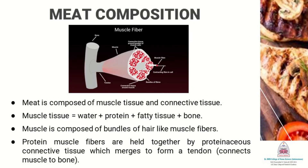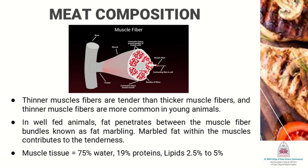Meat is composed of muscle tissues and connective tissues. Muscle tissues are made up of water, proteins, fatty tissues and bones. Muscle is composed of a bundle of hairline muscle fibers as shown in the diagram above. Protein muscle fibers are held together by proteinaceous connective tissues which merge together to form a tendon. The tendon helps to connect the muscles to the bones. Thinner muscle fibers are more tender than thick muscle fibers and are most commonly found in young animals. In any well-fed animal, the fat penetrates between the muscle fiber bundles, which is known as fat marbling.